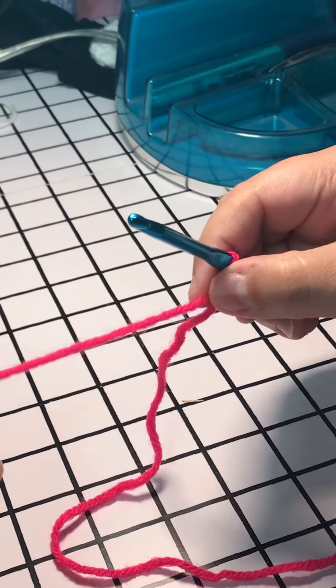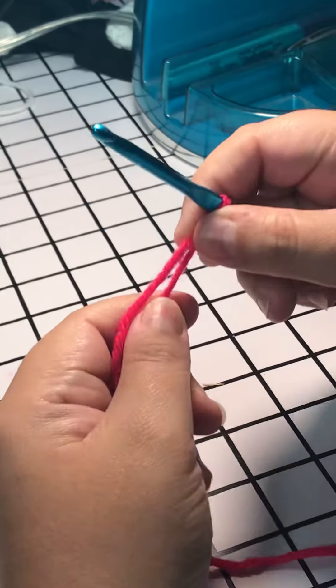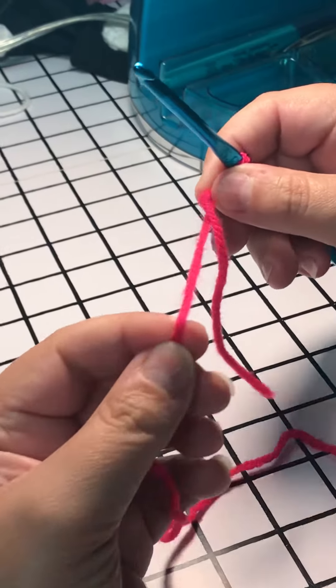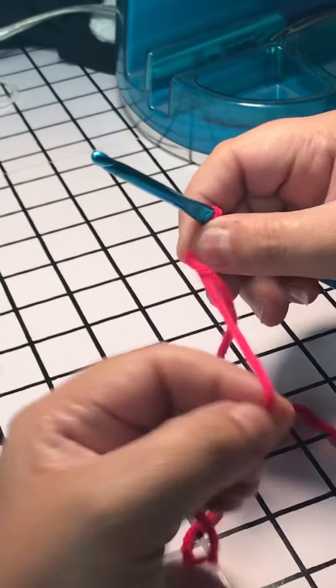One is the tail, which has nothing else connected to it, and one is the part that goes to your skein of yarn or ball, which is what we call the working end.